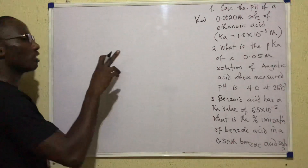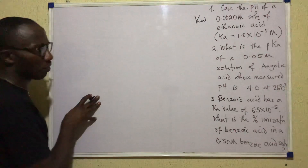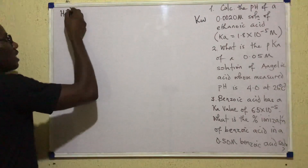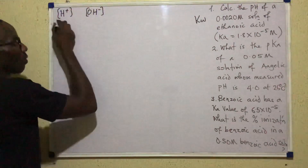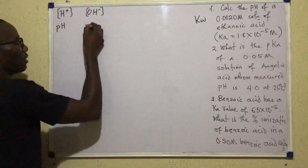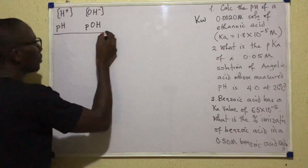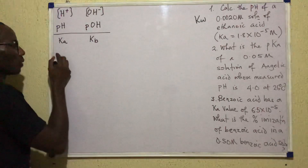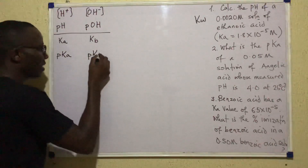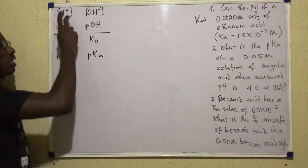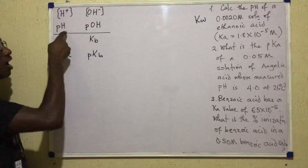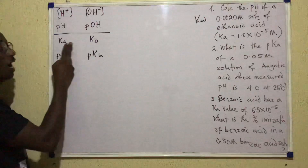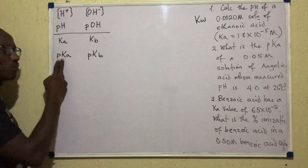What is pKa? Just as we deal with H+ and OH- concentrations for strong solutions and take their negative logs to get pH and pOH, for weak solutions we deal with Ka and Kb. The negative log of Ka gives pKa, and the negative log of Kb gives pKb. And just as pH + pOH = 14, and H+ × OH- = 10⁻¹⁴, similarly pKa + pKb = 14 and Ka × Kb = 10⁻¹⁴.